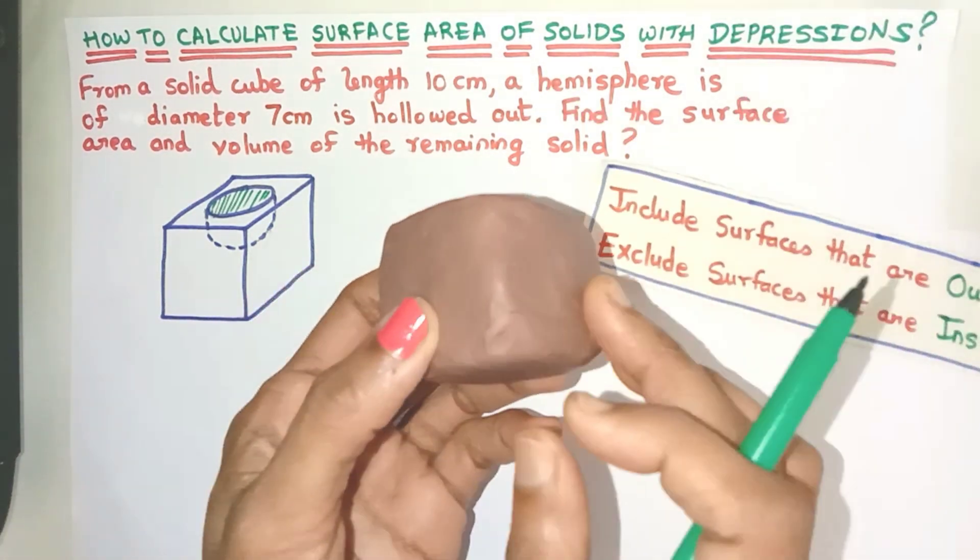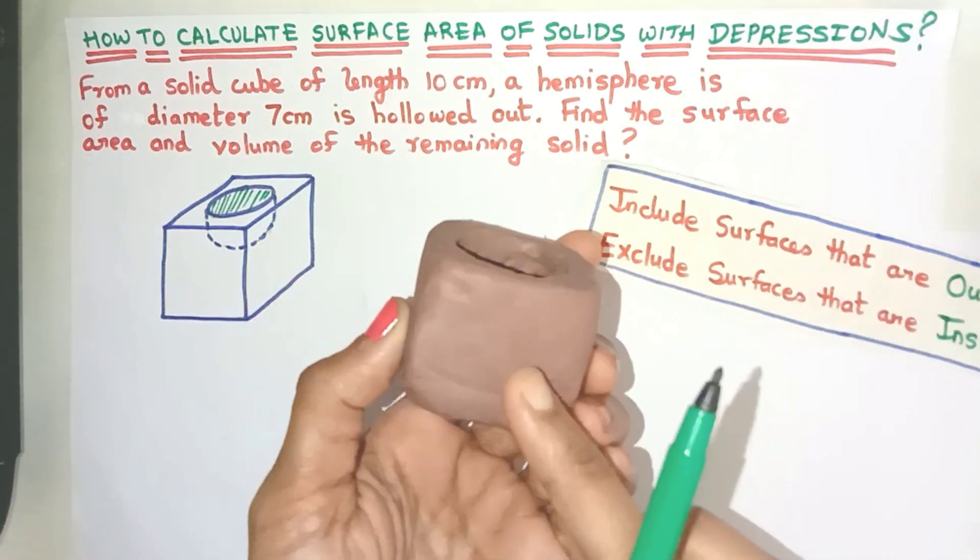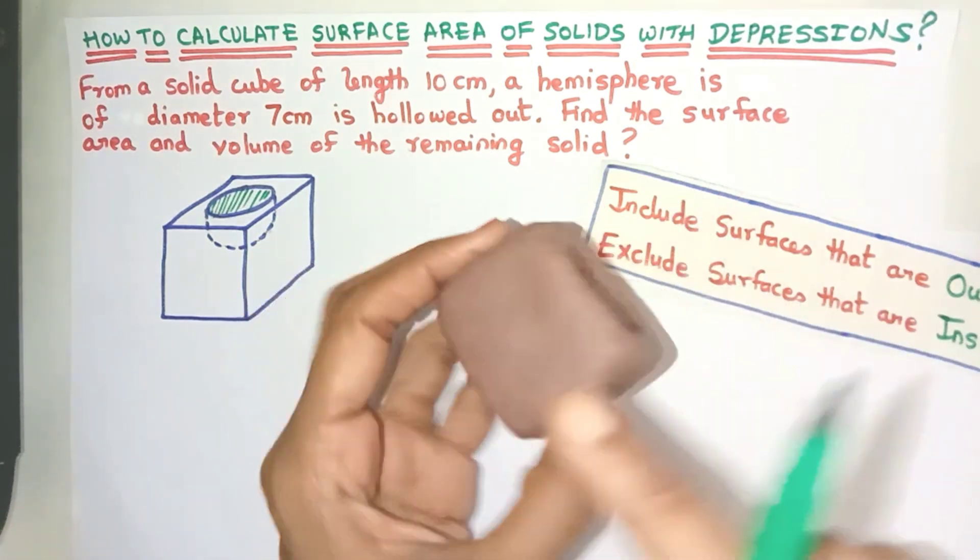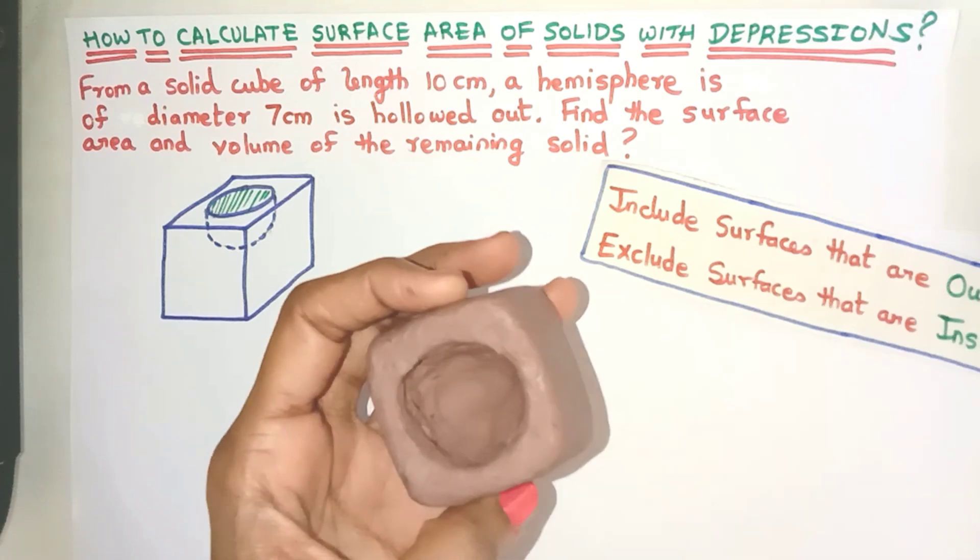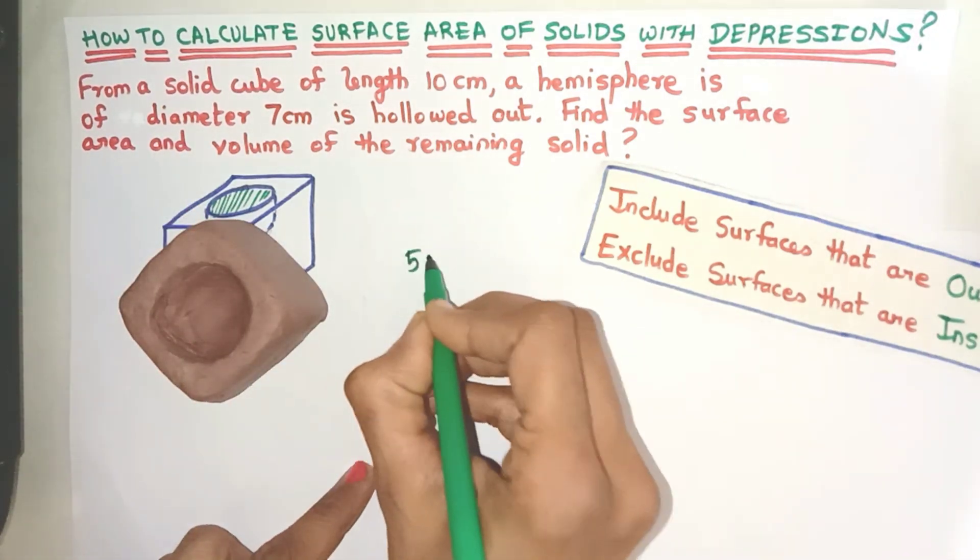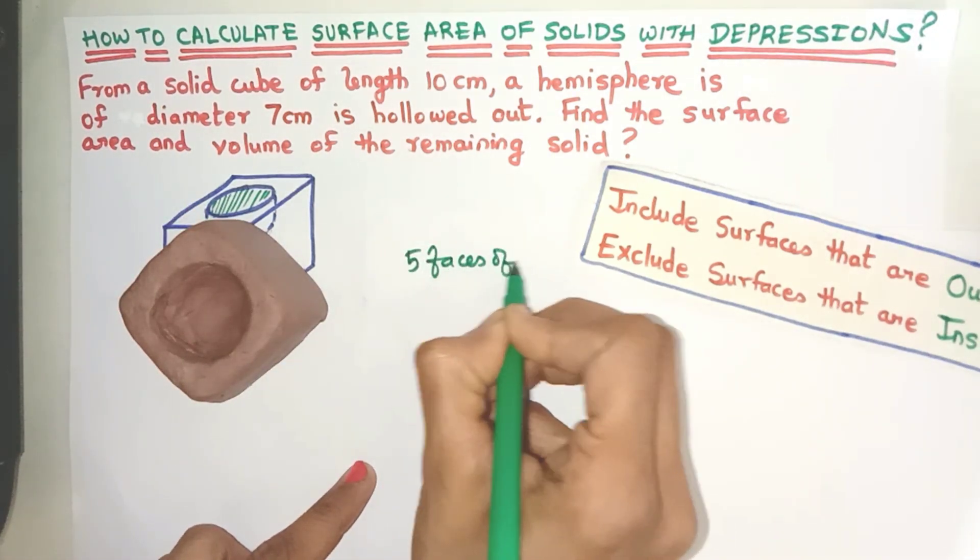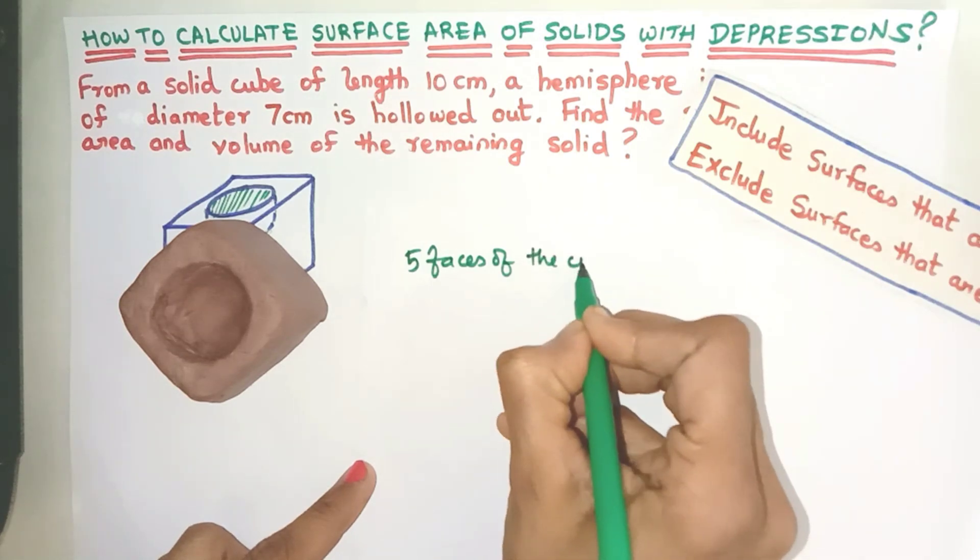If you see which surfaces are visible to us, definitely the five faces of the cube are visible to us so they will be included. So let me write that - the five faces of the cube, yes.